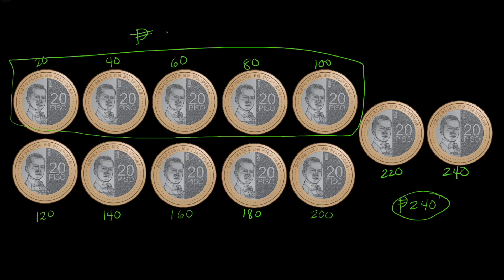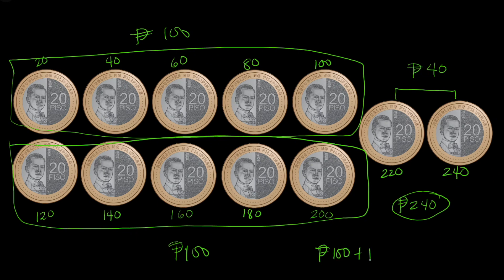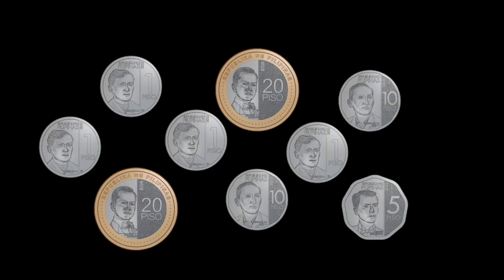...is equivalent to 100 pesos. This set of five 20-peso coins is also worth 100 pesos. So you just have to add 100 pesos plus 100 pesos plus 100 pesos plus 40 pesos, which is also equivalent to 240 pesos. Now let's have our last example.